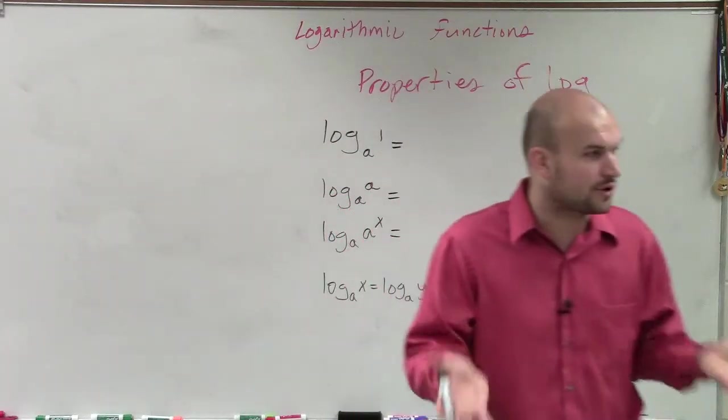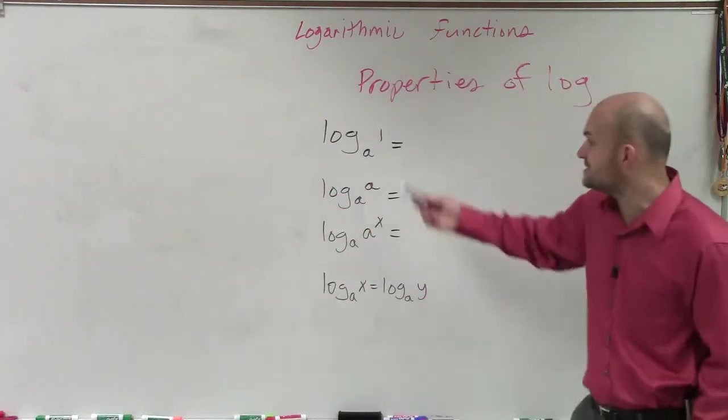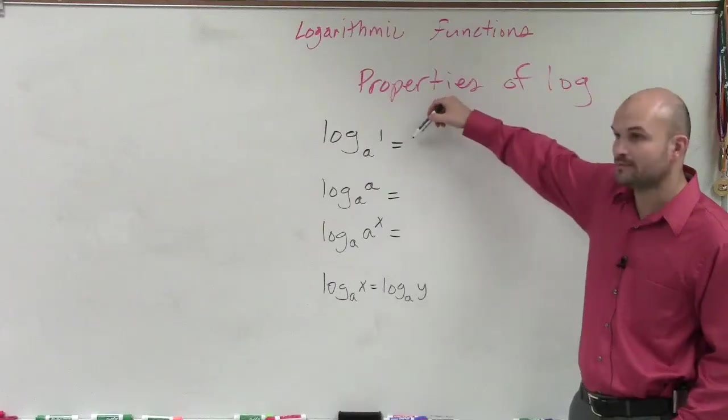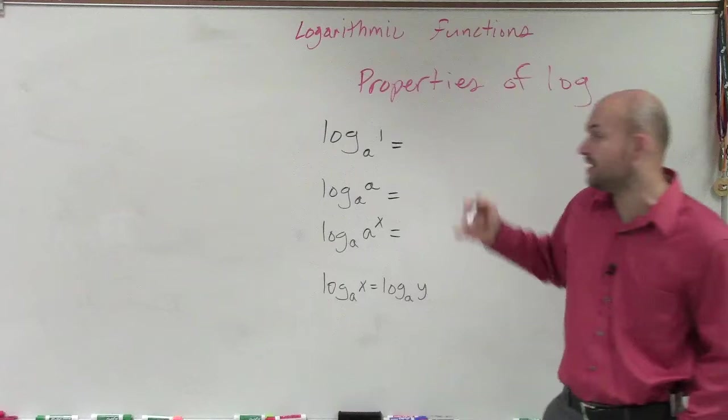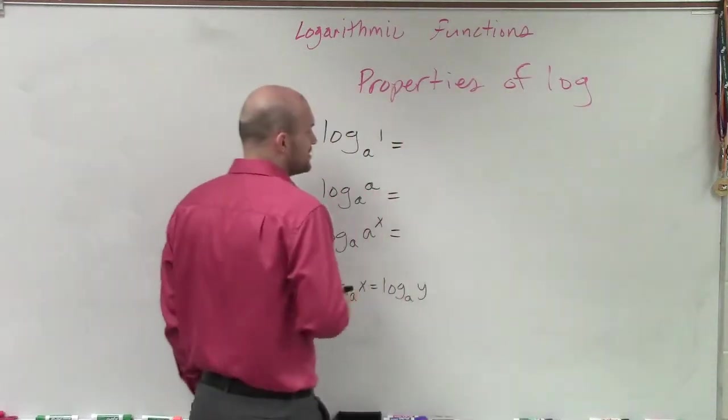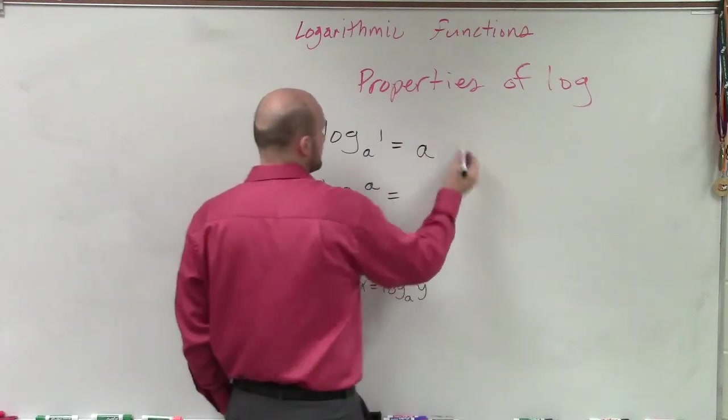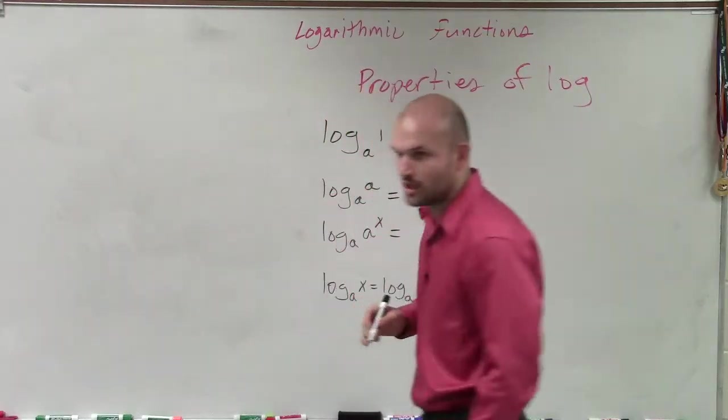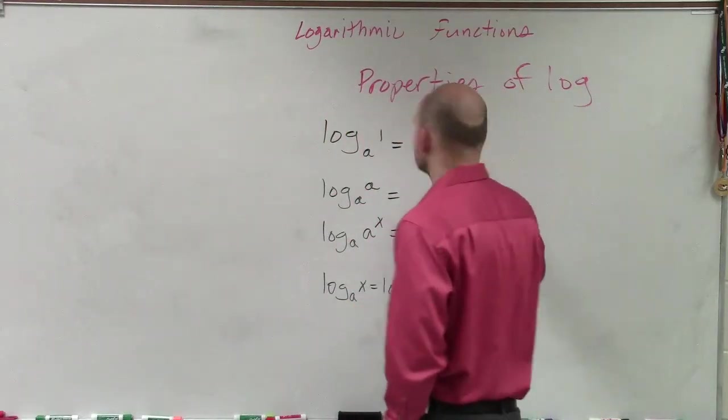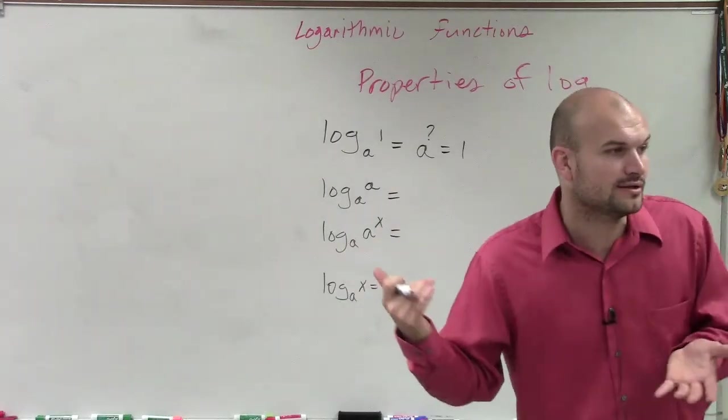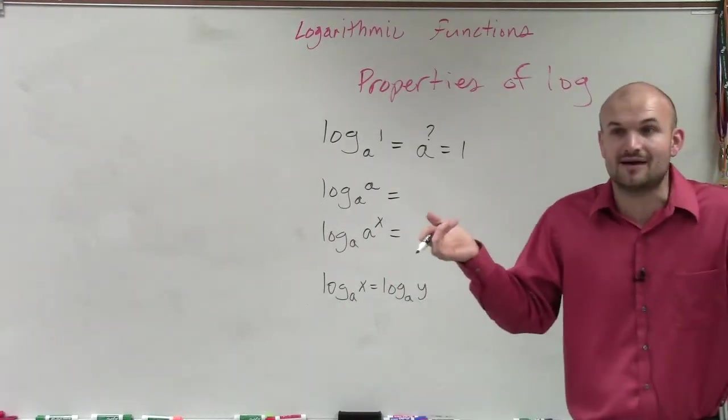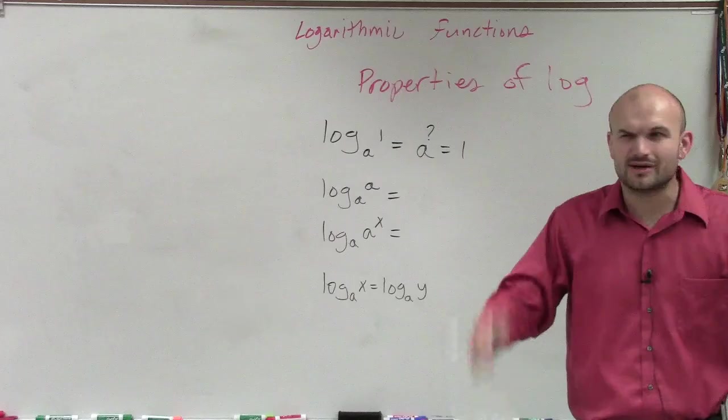Logarithms says a raised to what power equals 1, right? So I'm just going to rewrite this in exponential form. You could say a, and I'll even put a little question mark to represent my variable, is going to equal 1. So when I take a base and I raise it to what value is going to equal 1, there's only one number that we have. 1 or 0? 0.